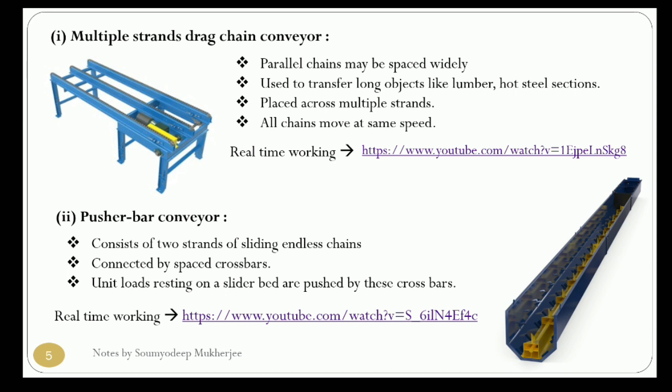The pusher bar conveyor is a slider-type conveyor where different materials can be pushed from one conveyor to another. It basically consists of two strands of sliding endless chain. In real-time working you can see how unit load materials are conveyed and categorized by their size, shape, or other aspects.